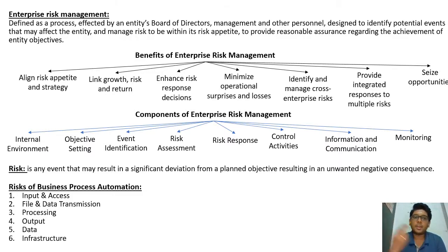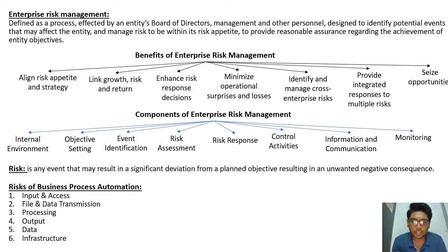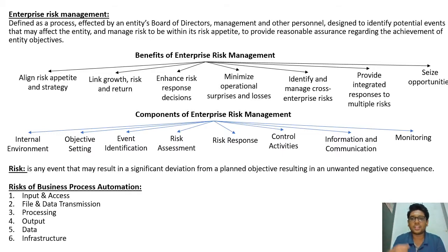The components of Enterprise Risk Management are: internal environment, objective setting, event identification, risk assessment, risk response, control activities, information and communication, and finally monitoring.